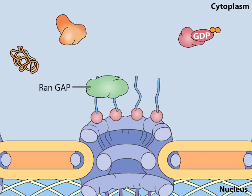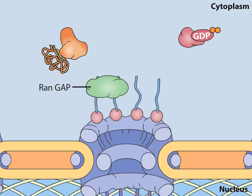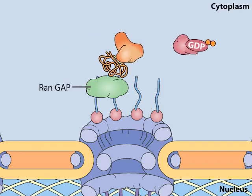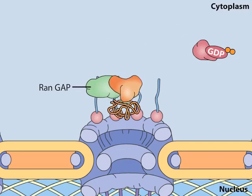RAN plays a key role in protein import and export. Note that while RAN is bound to GDP, it cannot disrupt the binding of importin to a cargo protein.